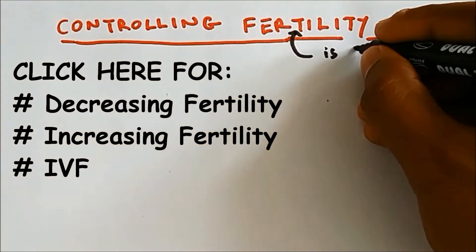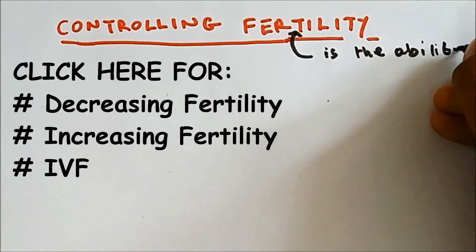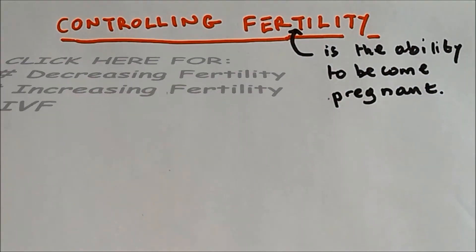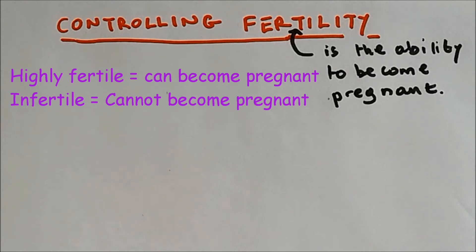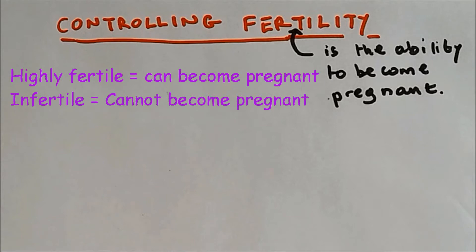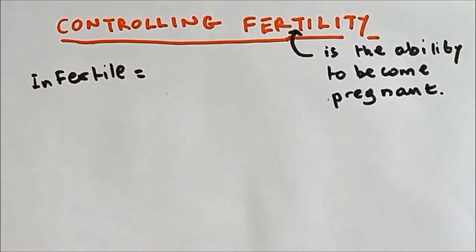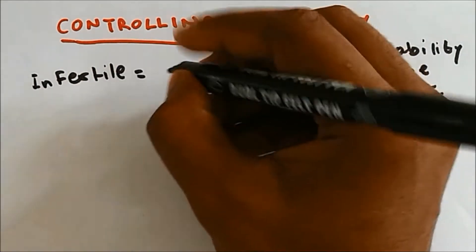What is fertility? If a woman is said to be highly fertile, that means she's producing a lot of eggs and she can become conceived. And if a woman is said to be infertile, then that means she's not producing eggs and she cannot be conceived. So infertile means cannot be conceived.